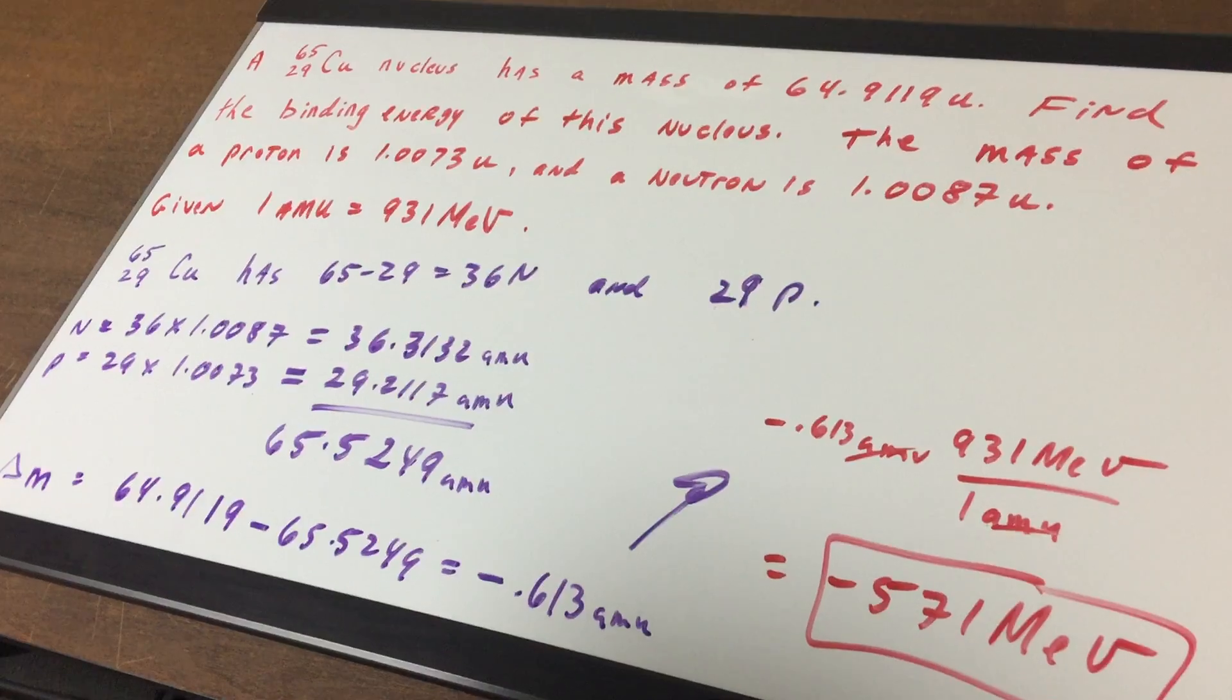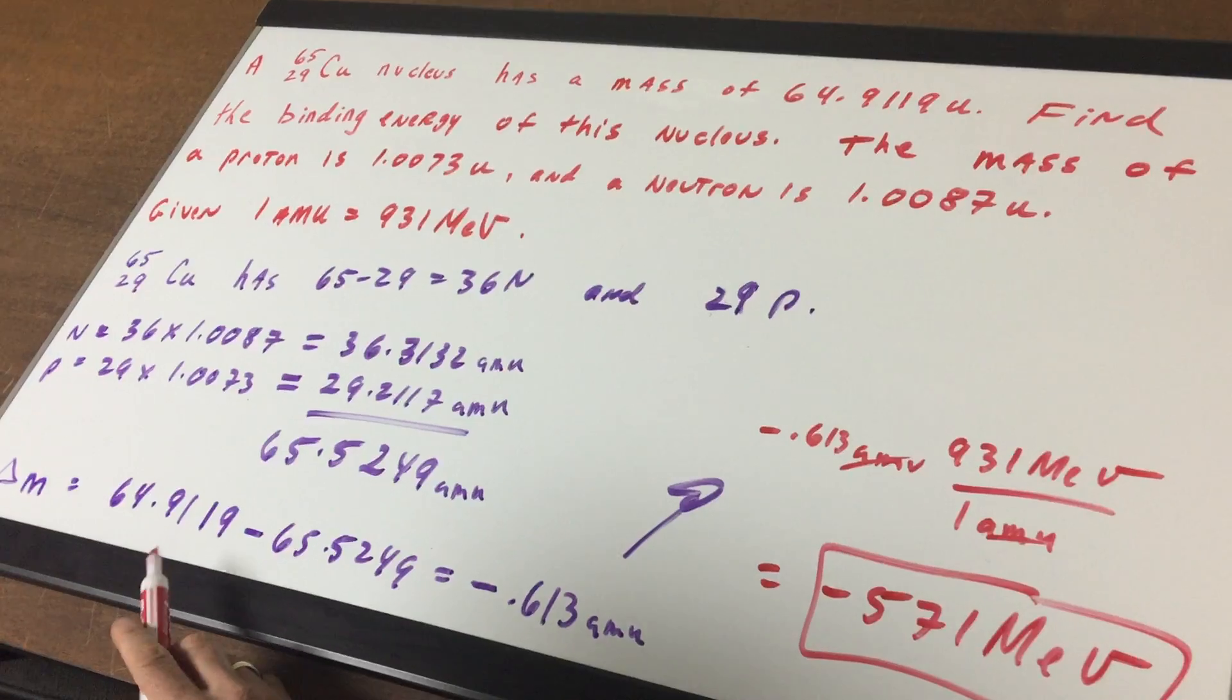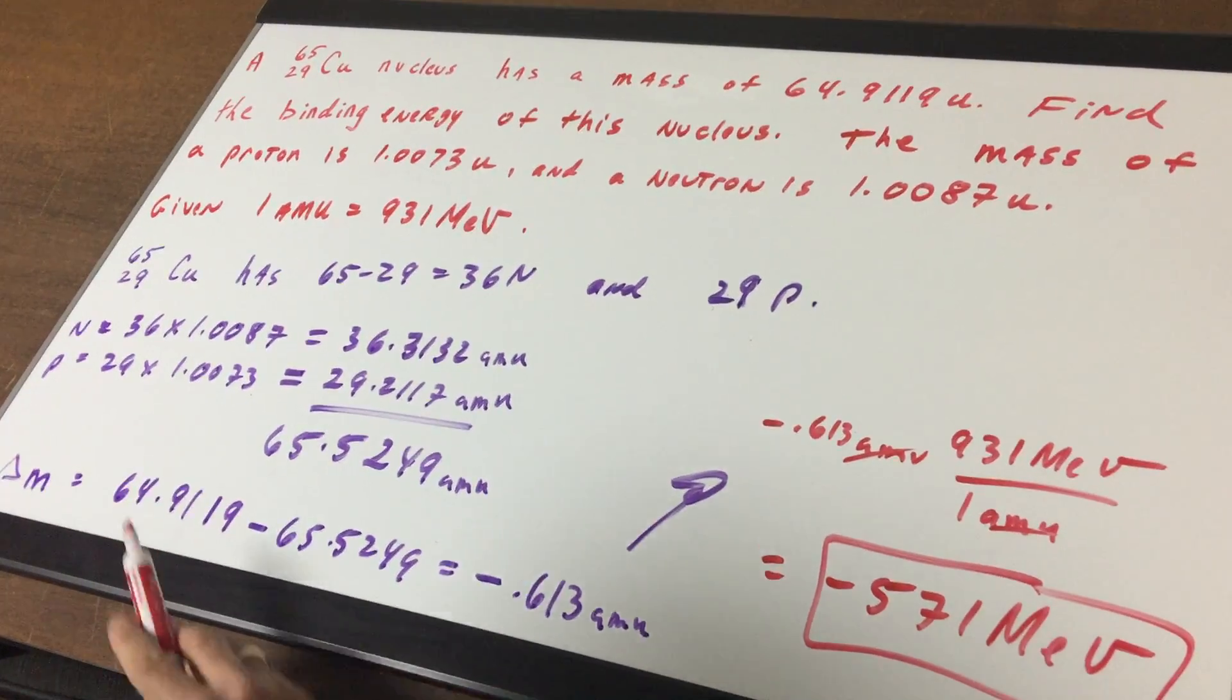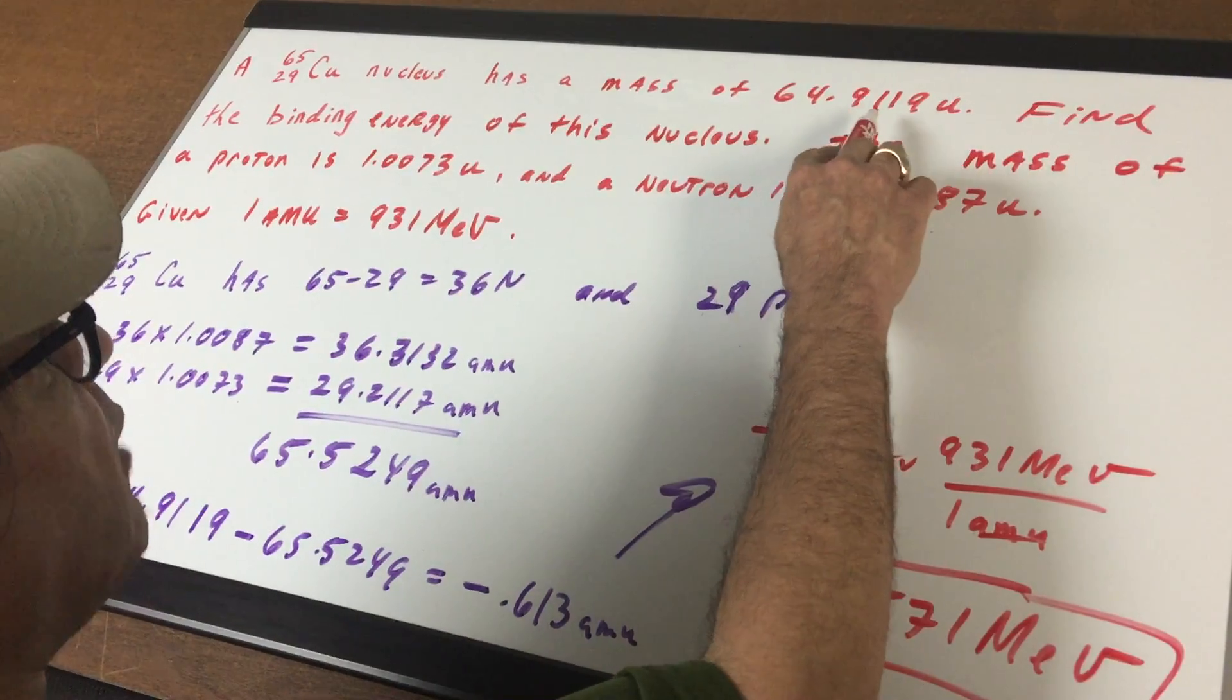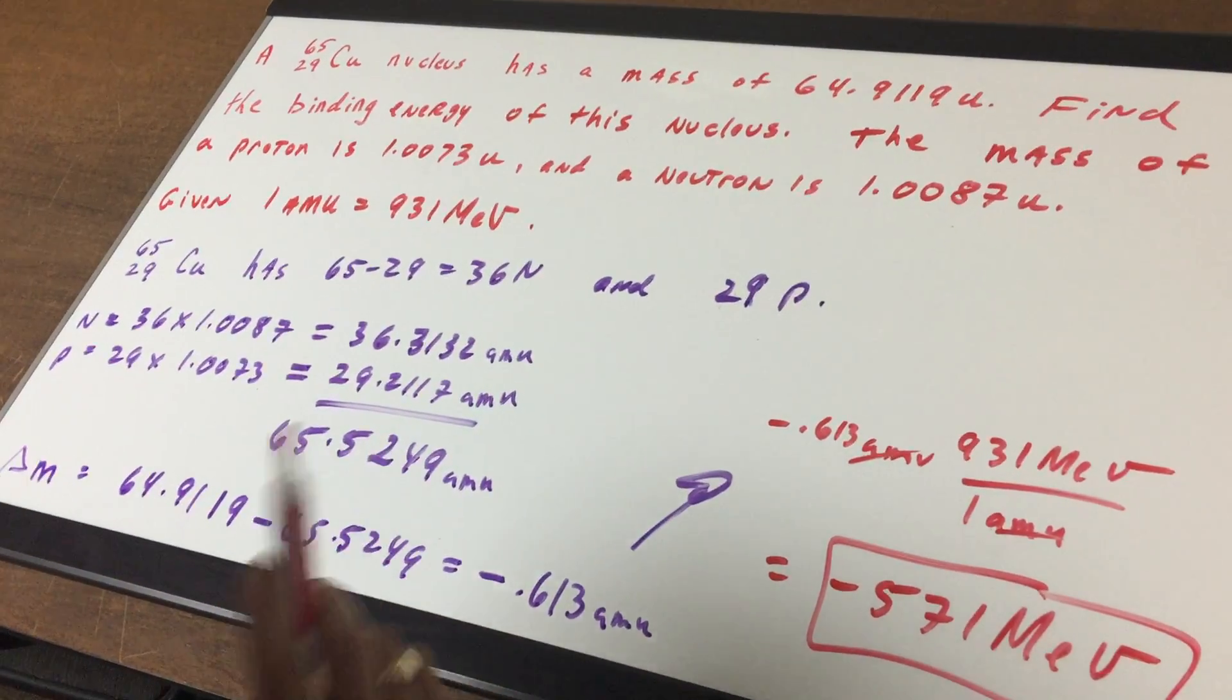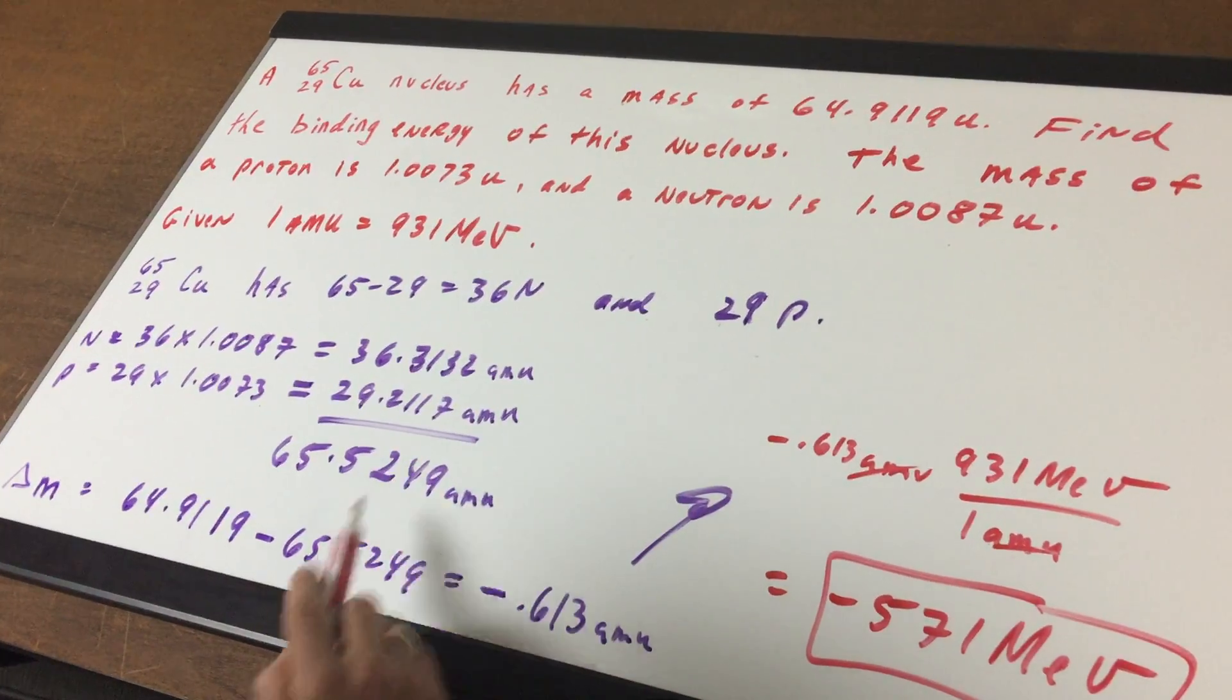Notice there's a mass difference. That change in mass is the mass defect. The actual mass of 64.9119 is less than the total amount of protons and neutrons making it up.